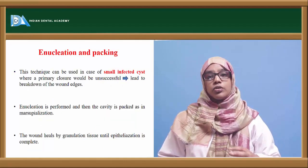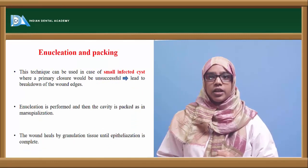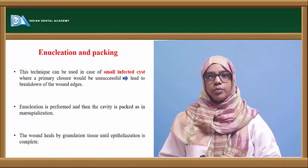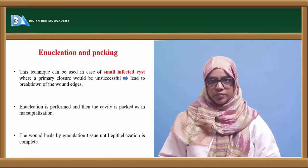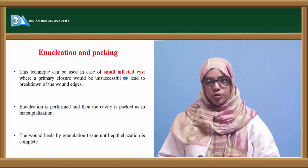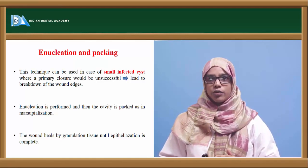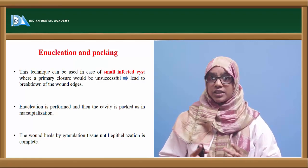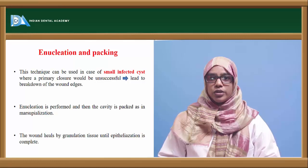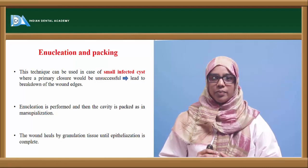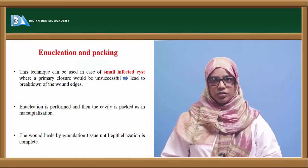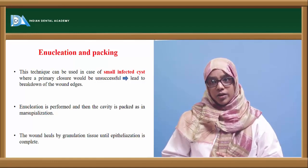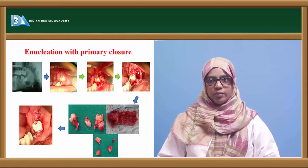Enucleation and packing is used in the case of smaller cystic lesions where primary closure would be unsuccessful — for example, small infected cysts where primary closure could lead to wound breakdown or wound edge dehiscence. In this technique, you enucleate the cyst and then pack it, similar to marsupialization. The wound heals by granulation tissue and eventual epithelialization.